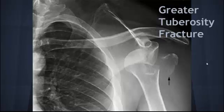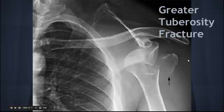The last associated injury is the greater tuberosity fracture. This occurs in about 10% of dislocations and is something you definitely need to look out for on X-ray. Here's an example — it's fairly obvious.